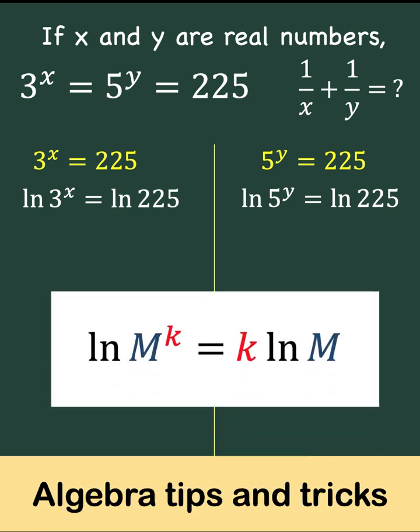Now let's recall some properties of logarithm. If we have ln of m raised to k, we can rewrite this as the exponent appended to ln of m. And therefore here, we can write this x at the front of ln to arrive at x ln of 3.